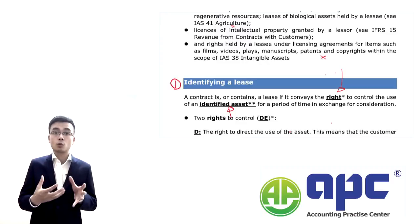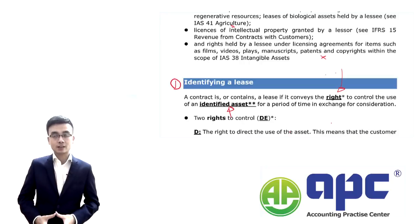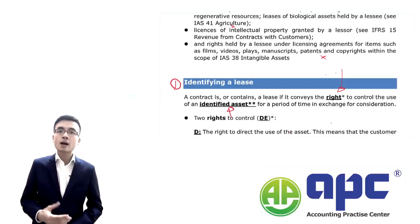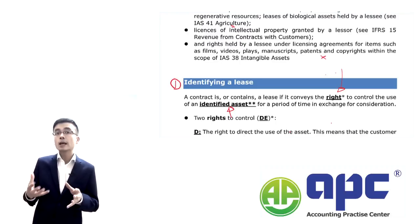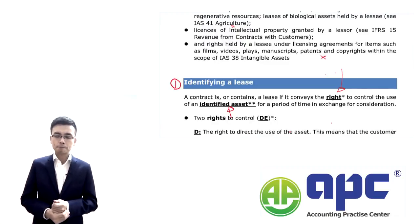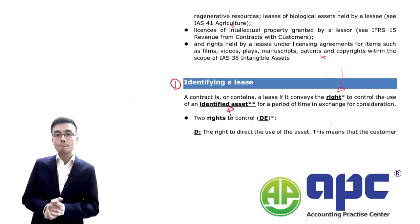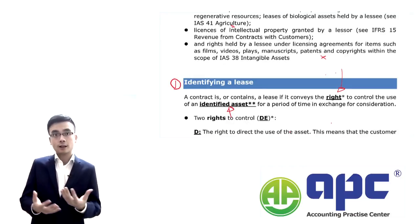If it's not related to an asset, we're not going to apply these accounting standards. As I said, if you want to have an asset, either you buy it or lease it. The two key words — right to control and identified asset — are absolutely critical. We've got a right to control the asset, such as a building or office space, where we can work and generate future economic benefits, for a period of time.